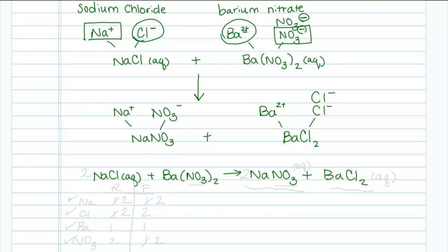Now I can go back and balance. On the left hand side, I have sodium, chlorine, barium, and the nitrate ion. I'm going to keep NO3 together instead of listing them out separately because it's an ion that appears on the reactant and the product side. So for my reactant side, I have 1 sodium, 1 chlorine, 1 barium, 2 nitrates. On the product side, 1 sodium, 1 nitrate, 1 barium, 2 chlorides.